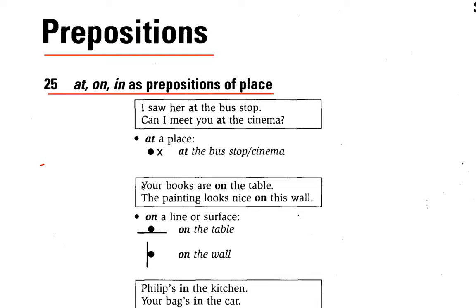You can look here in the column. Your books are on the table. So 'on' is the preposition. Your books are on the table. The painting looks nice on this wall. So 'on' is the preposition.